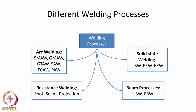We also have processes that use electrical resistance to join materials, such as spot welding, seam welding, and projection welding. Welding does not always require the materials to be completely molten — solid state welding is also possible, including ultrasonic welding, friction welding, and explosive welding, where fusion is not explicitly caused. We also have specialized processes where melting is initiated by a high-energy beam: LBW (laser beam welding) and EBW (electron beam welding).